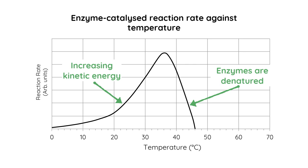That sweet spot in the middle — where there is a balance between increasing kinetic energy but where the enzymes aren't denatured — we have this peak of reaction rate, and this is known as the optimum temperature.